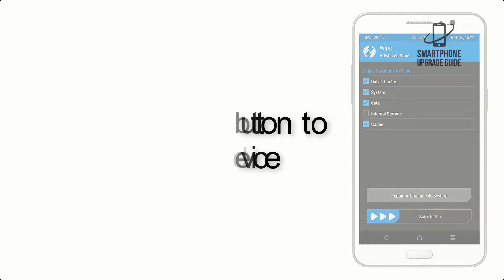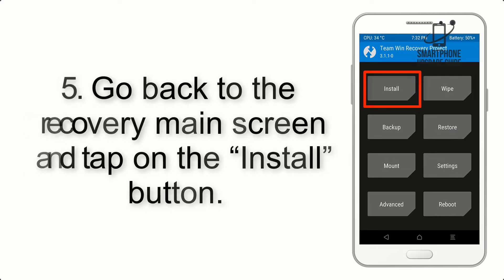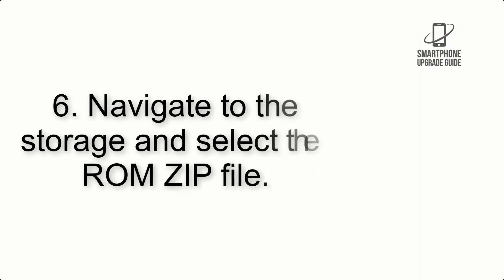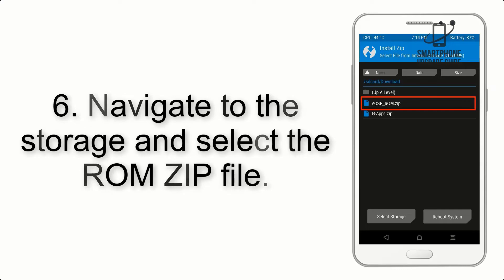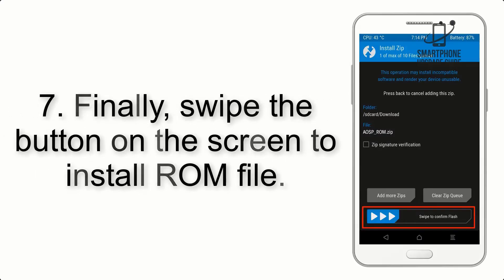Step 5: Go back to the recovery main screen and tap on the Install button. Step 6: Navigate to the storage and select the ROM zip file. Step 7: Finally, swipe the button on the screen to install the ROM file.